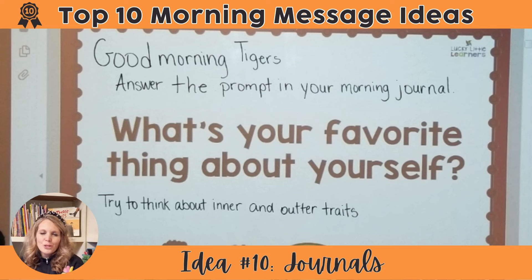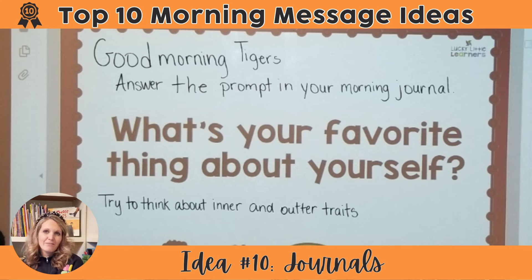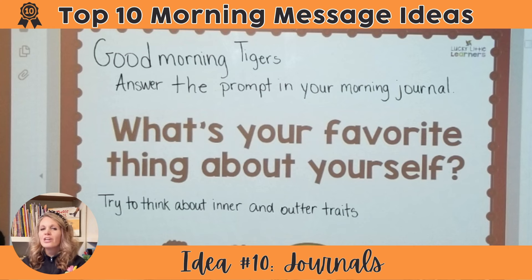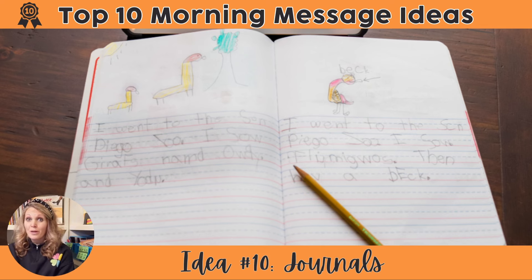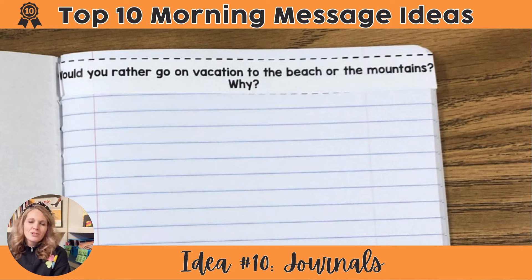Idea number ten is to use morning meeting discussions as journal prompts. There are a few ways to do this: you can just project the prompt, discuss, and then have kids go write about what they talked about. You can project it and have students write about it in their notebook, then bring their notebooks up to morning meeting to share. Or you can have students glue the prompt right into a notebook and write about it.